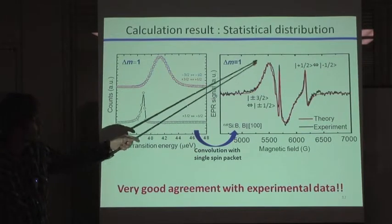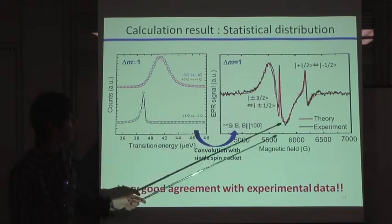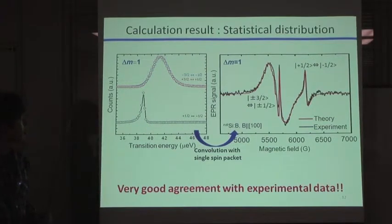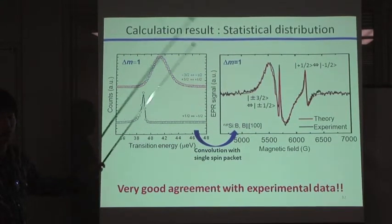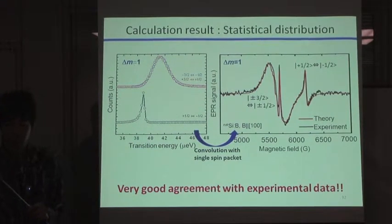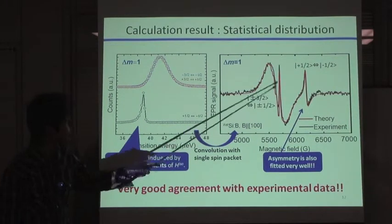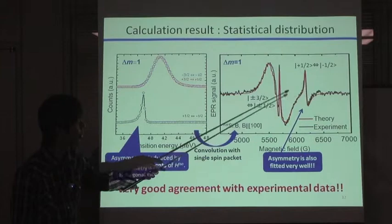A black solid line is the experimental data. And the red line is the calculated data. So, you can see very good agreement with experimental data and theoretical calculations. Moreover, this asymmetric line is also fitted very well.